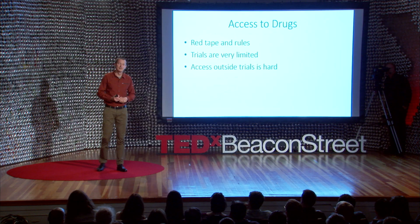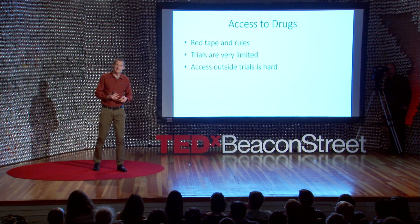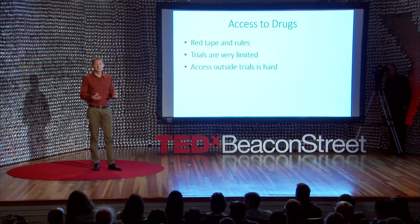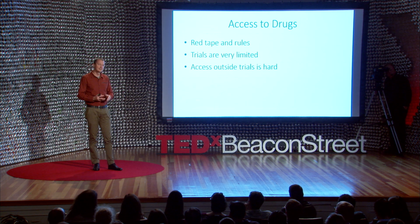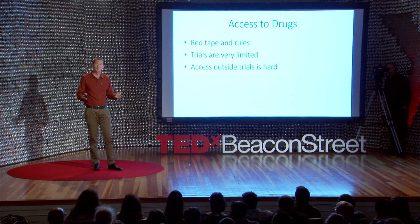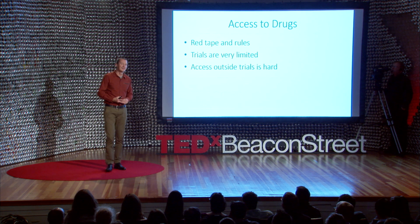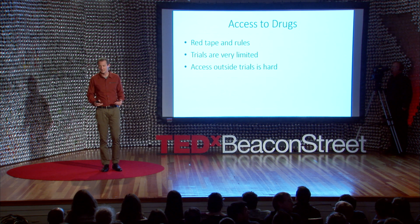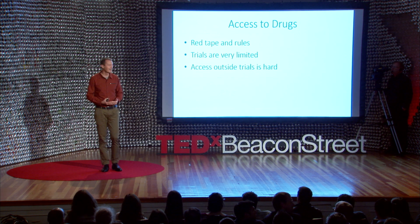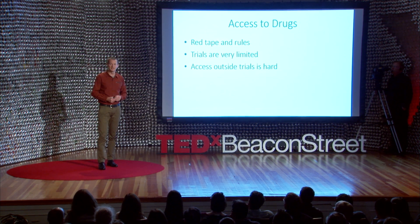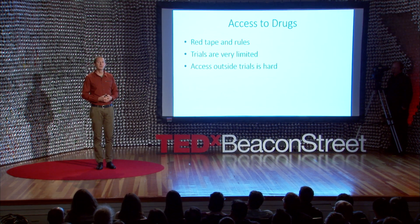The final problem I want to talk about is access to drugs. Access to these targeted therapies is typically tied up in red tape and challenge. Clinical trials are the classic way to get hold of these things, but they're quite limited — not available to patients with confounding conditions, which is most people by the time they get to cancer treatment. They don't typically allow treatment in conjunction with other treatments, so the cocktail approach is challenging. And access to drugs outside of trials is tough as well. But these are social and political problems, and if we have data, we can solve these problems too.